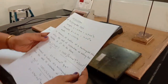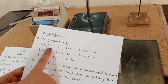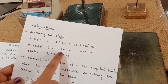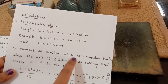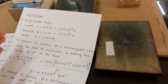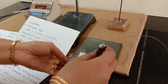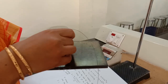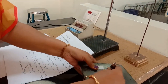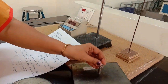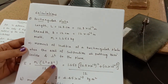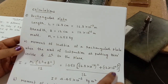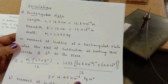To calculate the moment of inertia of the rectangular plate, we have noted the length as 16.8 cm, breadth as 12 cm, and mass as 1.253 kg. When the axis of suspension passes through the center and is perpendicular to the plane, the moment of inertia formula is I = m₁(l² + b²)/12. Substituting all the values, the moment of inertia is obtained.